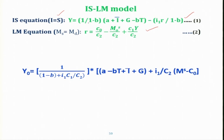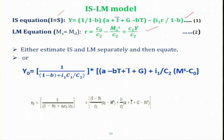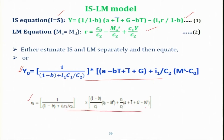In order to find out the equilibrium, you equate the IS equation with the LM equation. You can either estimate IS and LM separately and then equate them, or you can directly equate and find the equilibrium level of income. You can solve it in terms of equilibrium level of income Y naught, or alternatively solve for equilibrium level of rate of interest. Algebraically, we can find the IS-LM model equilibrium where both product market and money market are in equilibrium.